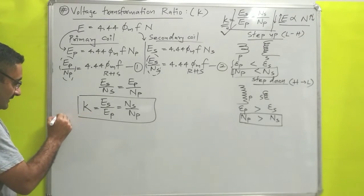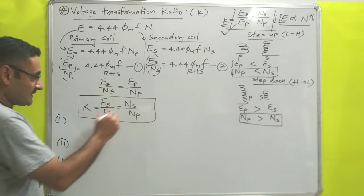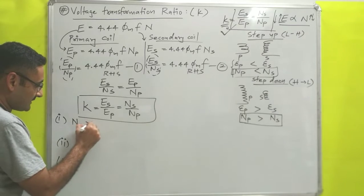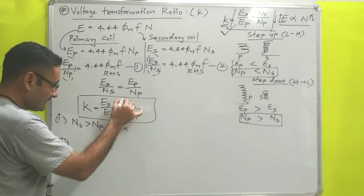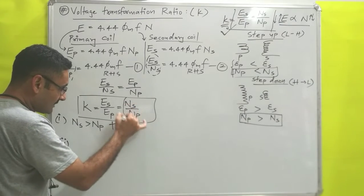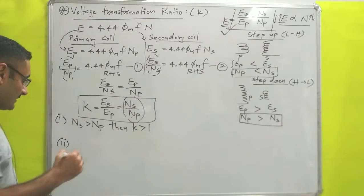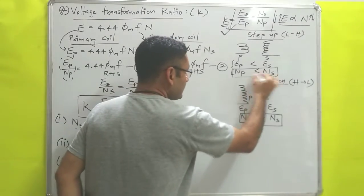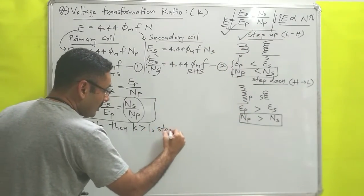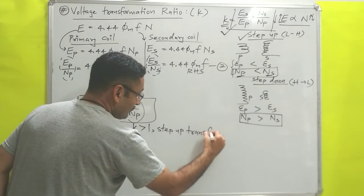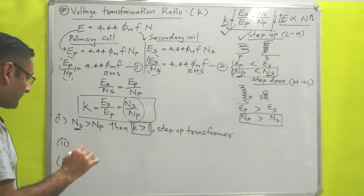Now, three important cases. First: if Ns is greater than Np, then the ratio Ns / Np is greater than one, which means K is greater than one. When the number of turns in the secondary coil is more than the primary, we are talking about a step-up transformer. So, for a step-up transformer, the value of K is always greater than one.